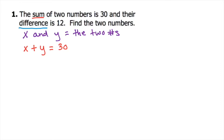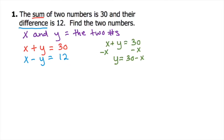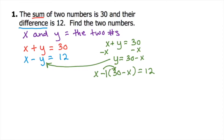The second equation is 'their difference is 12,' so you want to keep the same order as you did with the first equation — x came first — so you're going to have x minus y equals 12, because the difference is 12. Don't rearrange and don't put y minus x. Now we're going to find those two variables using substitution. First, get y by itself from the first equation: subtract x and you get y equals 30 minus x.